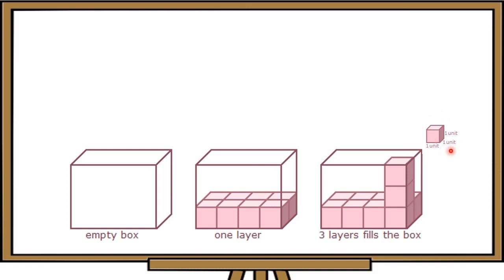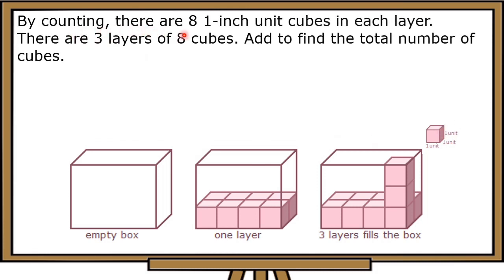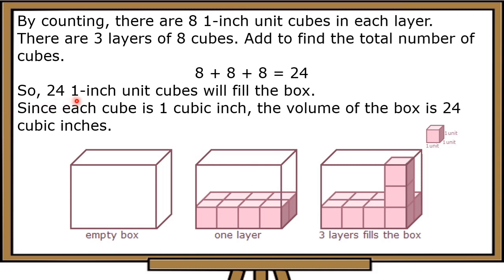Assuming the unit of measure of the cube is in inches — length 1 inch, width 1 inch, height 1 inch. By counting, there are 8 one-inch unit cubes in each layer. There are 3 layers of 8 cubes — first 8, second 8, and third 8. Add to find the total: 8 plus 8 plus 8 equals 24. So 24 one-inch unit cubes will fill the box. Since each cube is 1 cubic inch, the volume of the rectangular prism is 24 cubic inches.